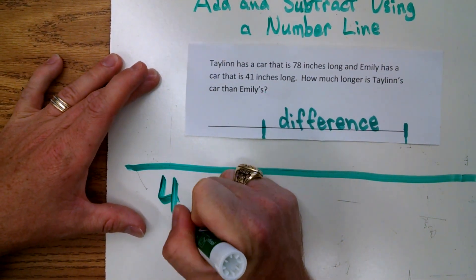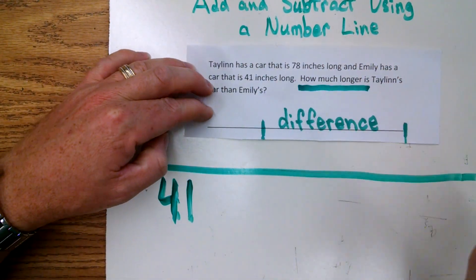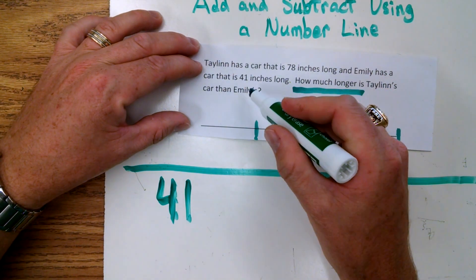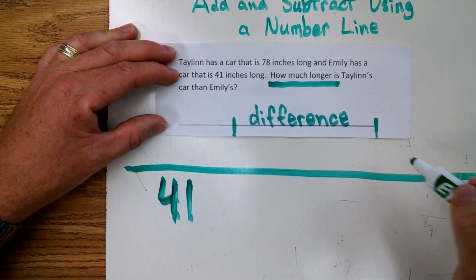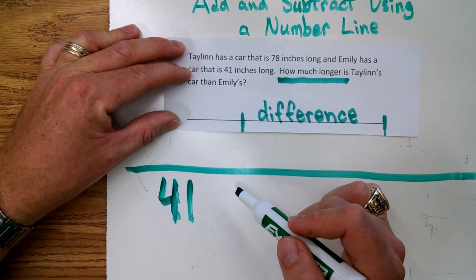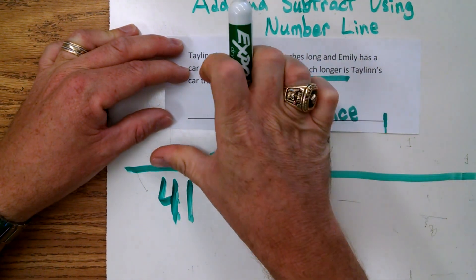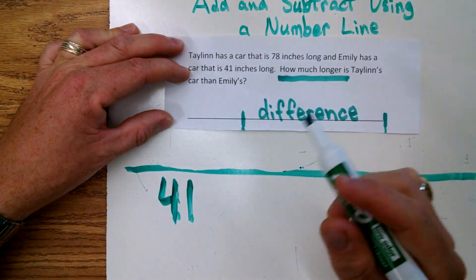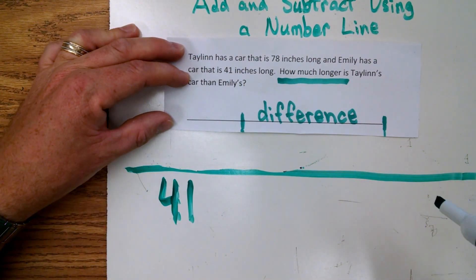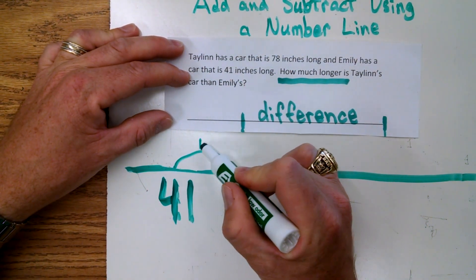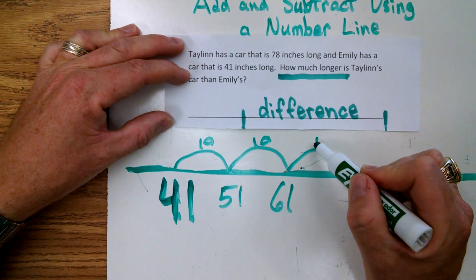A lot of people are good at counting up, so I'm going to start by counting up. We're not adding — we're just going to find that difference, which is the space between the two numbers. So if we start at 41 and count up to 78: 41 and 10 gets us 51, and another 10 is 61, and another 10 is 71. If we go another 10, we'd be at 81, and that's too far — we only want to get to 78.